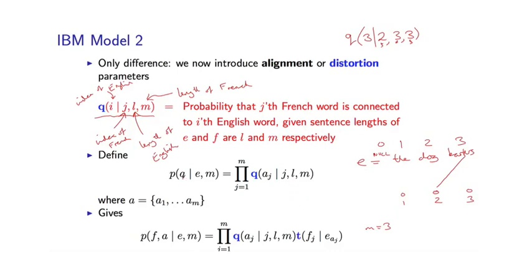Abstractly, an alignment is again going to be a sequence of variables A1 through AM, specifying for each of the French words what it's aligned to. To calculate the probability of an alignment, we multiply together the Q variables: a product from J equals 1 to M of Q, where A sub J is the alignment position for the Jth word, conditioned on position J, length L, and length M.